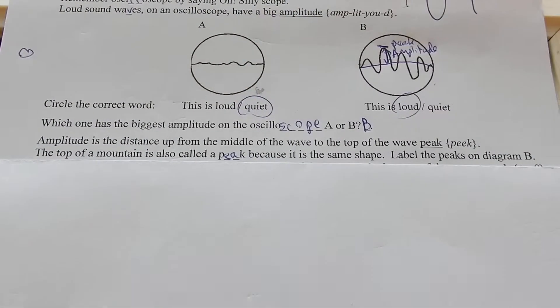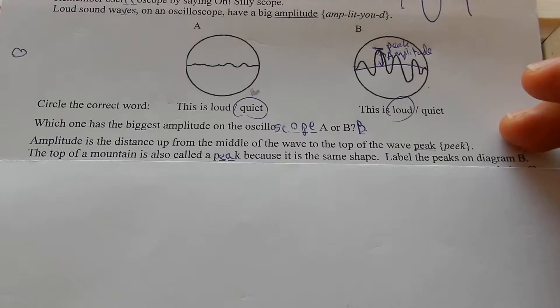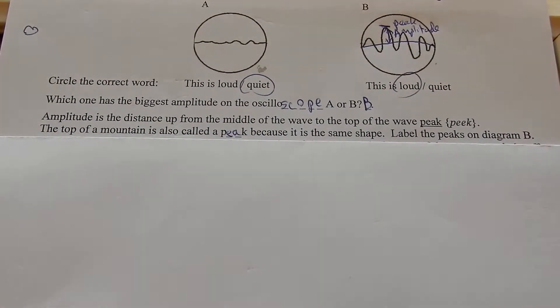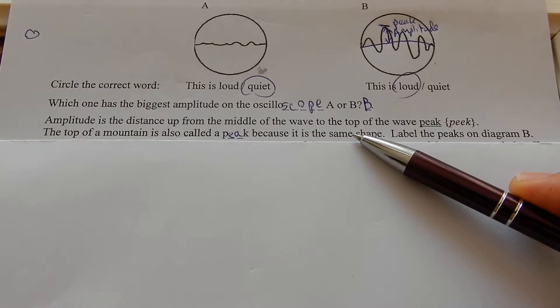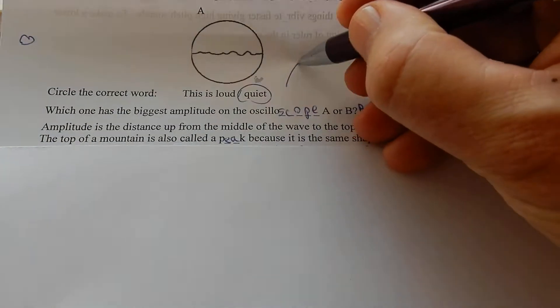The top of a mountain is also called a peak. We have a mountain in Hong Kong called the Peak. It's Victoria Peak because it is the same shape, the mountain shape.